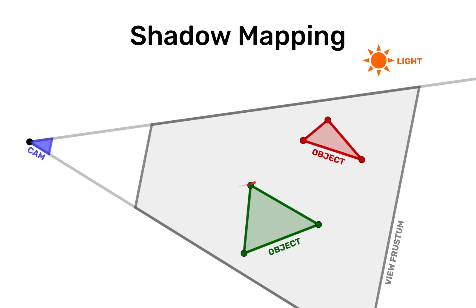We have a camera, we have a green object and a red object and we have a light source. And here this is the view frustum of that camera.